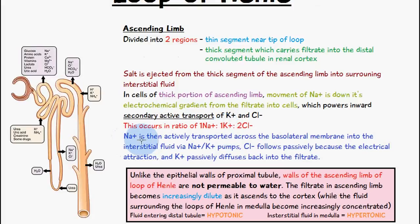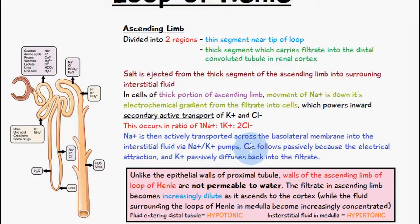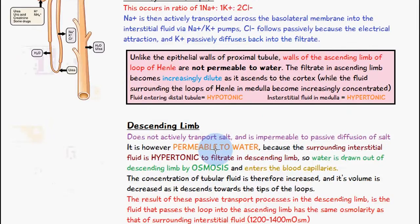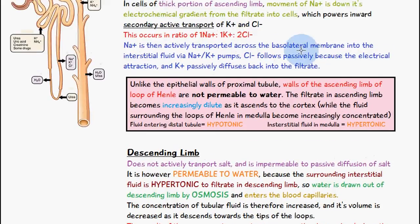The sodium ions are then actively transported across the basolateral membrane of the epithelial cells of the ascending limb into the interstitial fluid surrounding the nephron via sodium and potassium pumps. Chloride ions are also going to follow passively because it becomes more positive, and potassium ions are going to diffuse back into the filtrate.